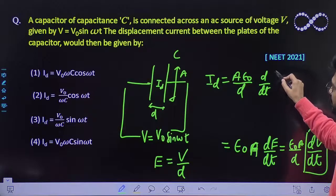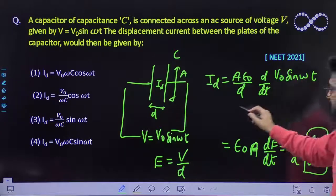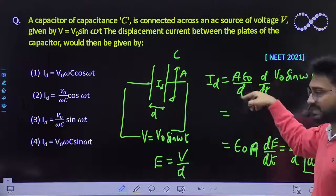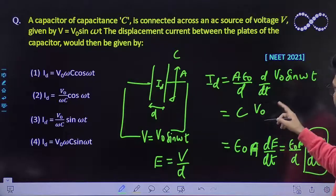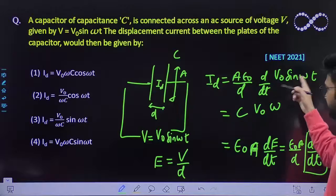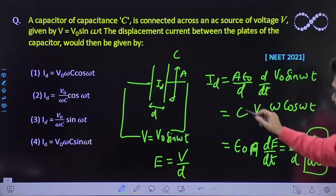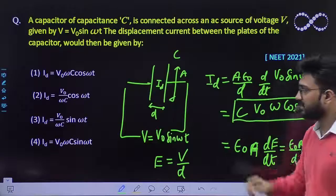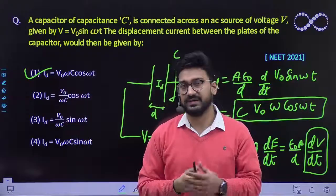And V is nothing but V0 sin ωt. So if I will differentiate it, this is nothing but capacitance of the capacitor C. V0 will come out and sin ωt, after differentiating, ω will come out, so it would be cos ωt. So this is the final answer that we are getting: V0 ω cos ωt. So first would be the correct option that you should get.